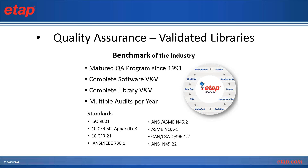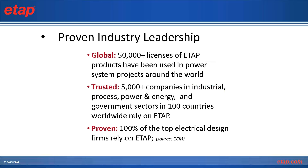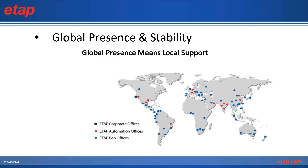The QA program has multiple audits per year and validated libraries that are nuclear certified — meaning all cables and protective devices in the library have been validated. ETAP also demonstrates proven industry leadership: it has over 50,000 licenses globally, is trusted by over 5,000 companies in industrial, process, power, energy, and government sectors, and 100% of the top electrical design firms rely on ETAP. ETAP also has a global presence with local support in local languages.